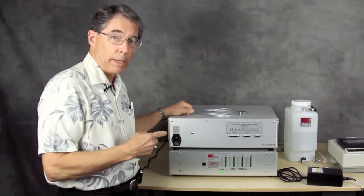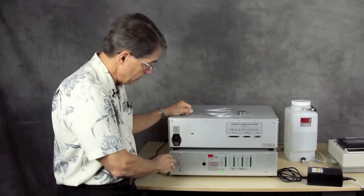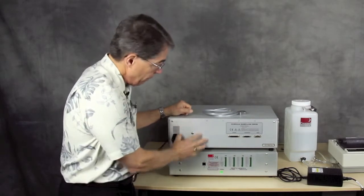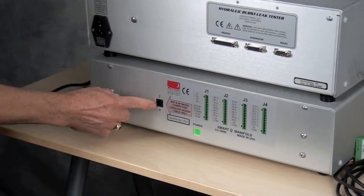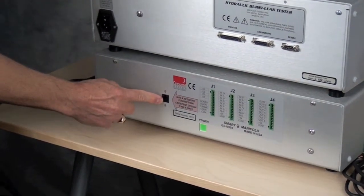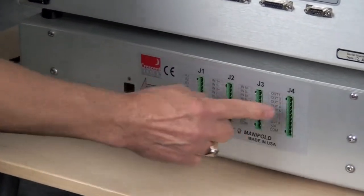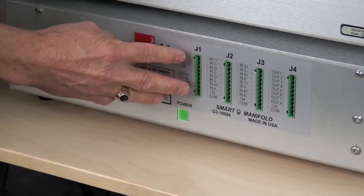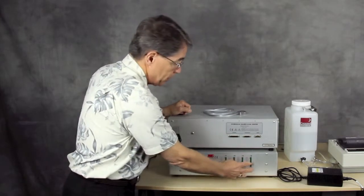Okay, let's take a look at the back of the HBLT and the hydraulic burst leak tester together here. This is obviously the HBLT. And here is the smart manifold. You'll notice this RJ485 connector, which is the communications connector. And then we have various connectors here. J1 is the one that is most important for use right now. J2, 3 and 4 are for future expansion.